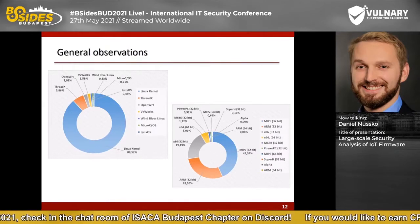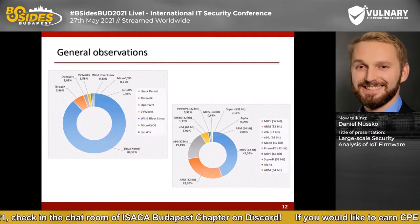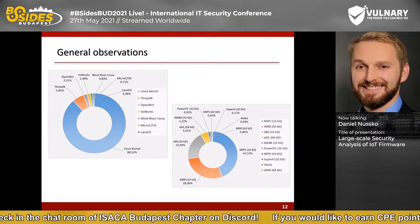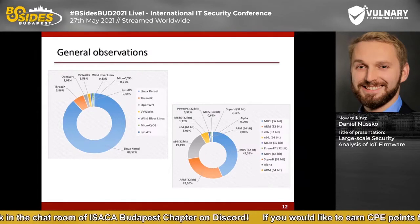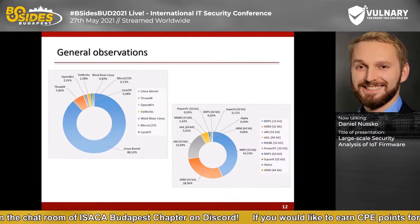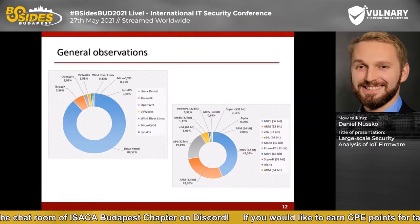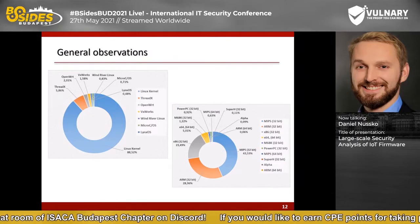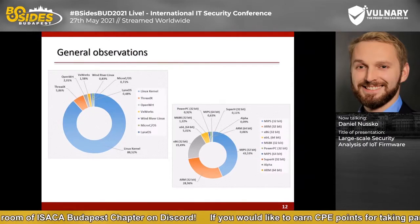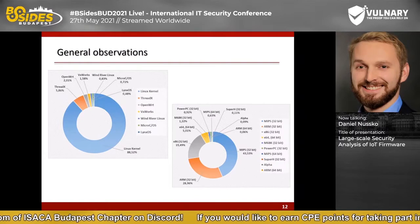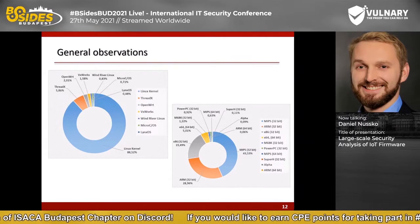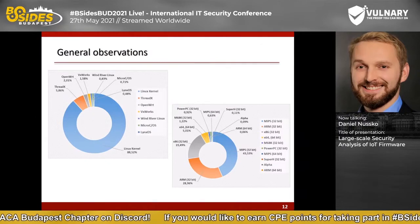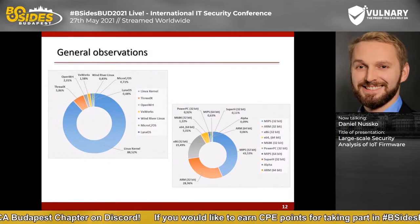Let's look at the results and start with some general observations. The majority of analyzed firmware images are based on a Linux kernel — in 88% of all firmware files, a Linux kernel was identified. About 6% use ThreadX, a proprietary OS often used for consumer electronics. About 2% use OpenWrt, a Linux-based OS used for routers. A small number of devices use VxWorks, WinRiver Linux, and LynxOS.